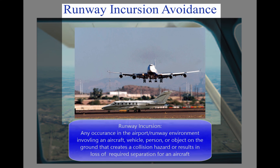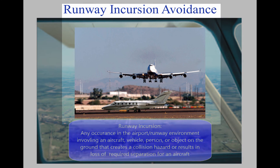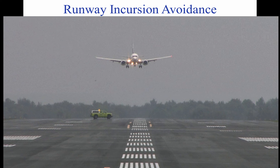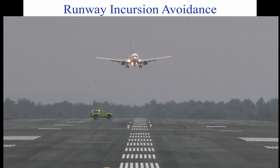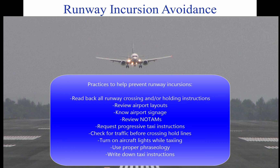Runway incursion avoidance. A runway incursion is any occurrence in the airport runway environment involving an aircraft, vehicle, person, or object on the ground that creates a collision hazard or results in a loss of required separation with an aircraft taking off, intending to take off, landing, or intending to land. It is important to give the same attention to operating on the surface as in other phases of flight. Proper planning can prevent runway incursions and the possibility of a ground collision. A pilot should be aware of the aircraft's position on the surface at all times and be aware of other aircraft and vehicle operations on the airport. At towered airports, taxi instructions can be complex, and it may be advisable to write them down.